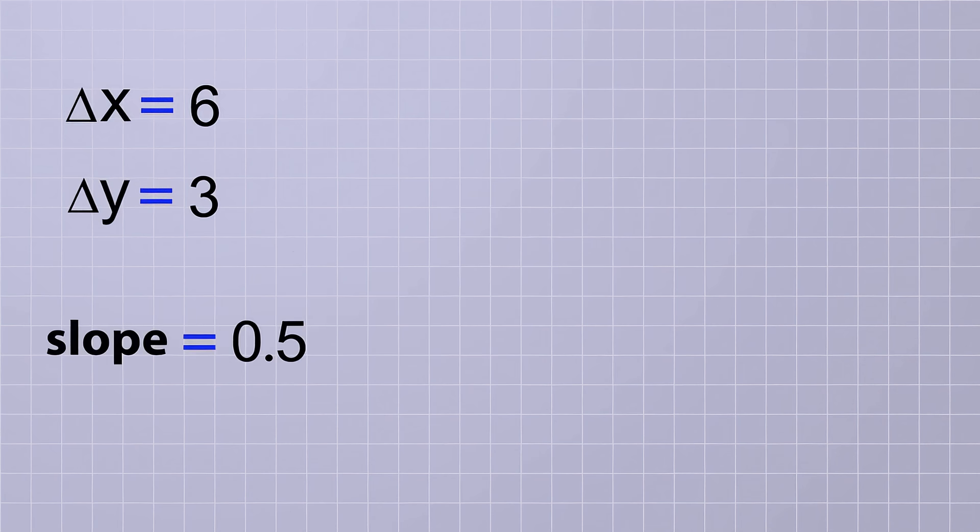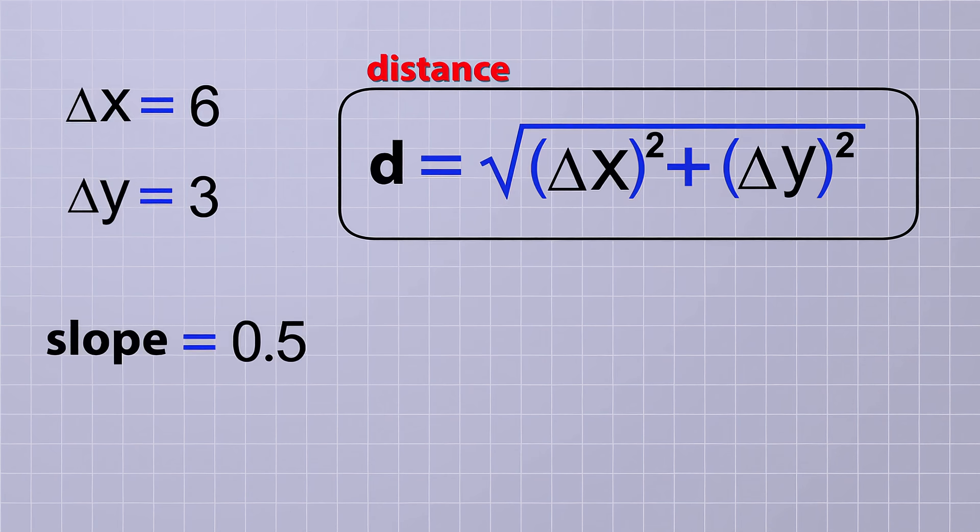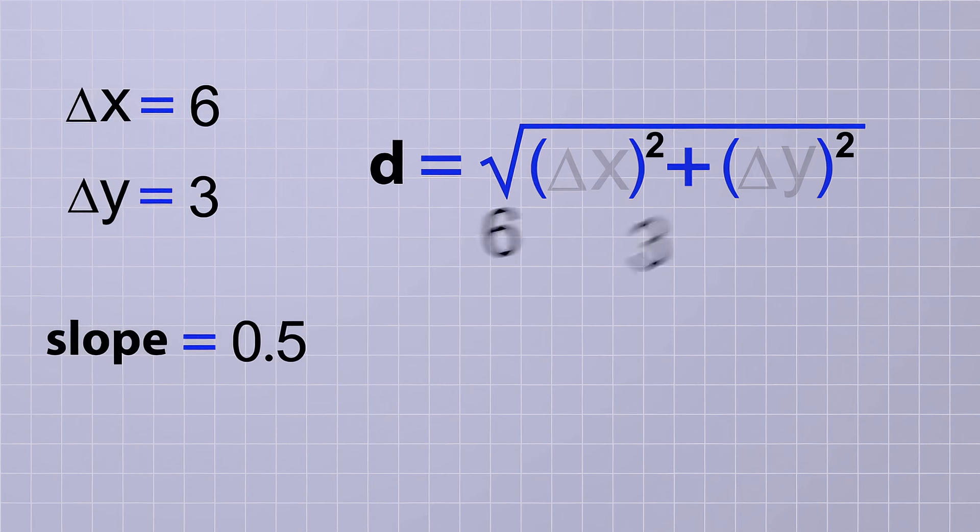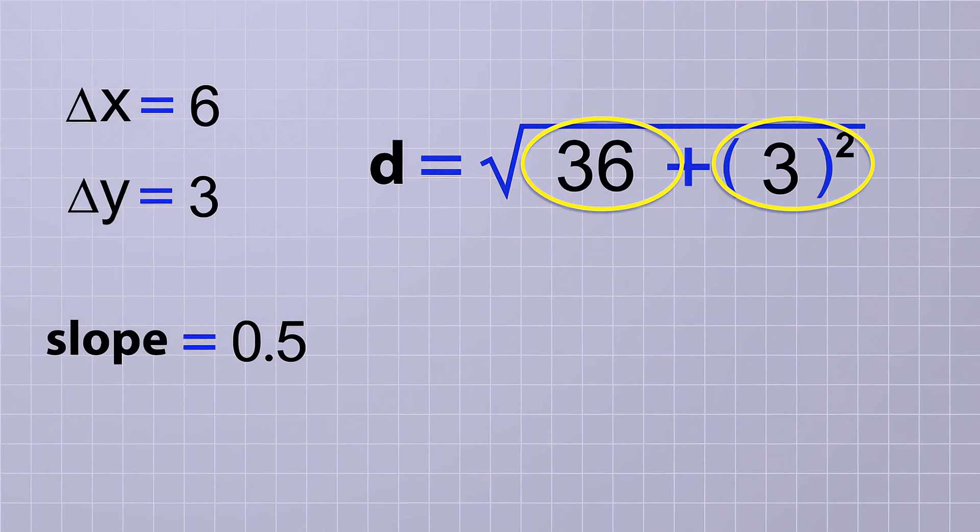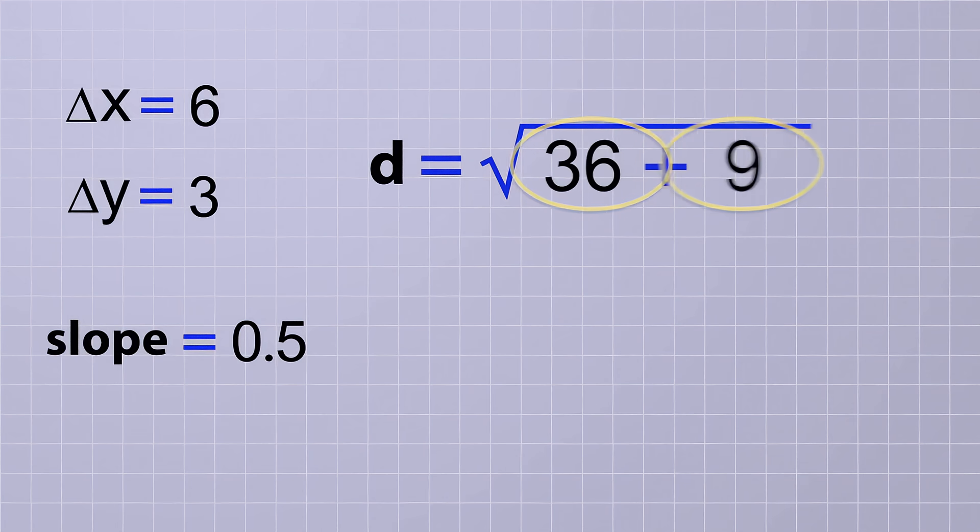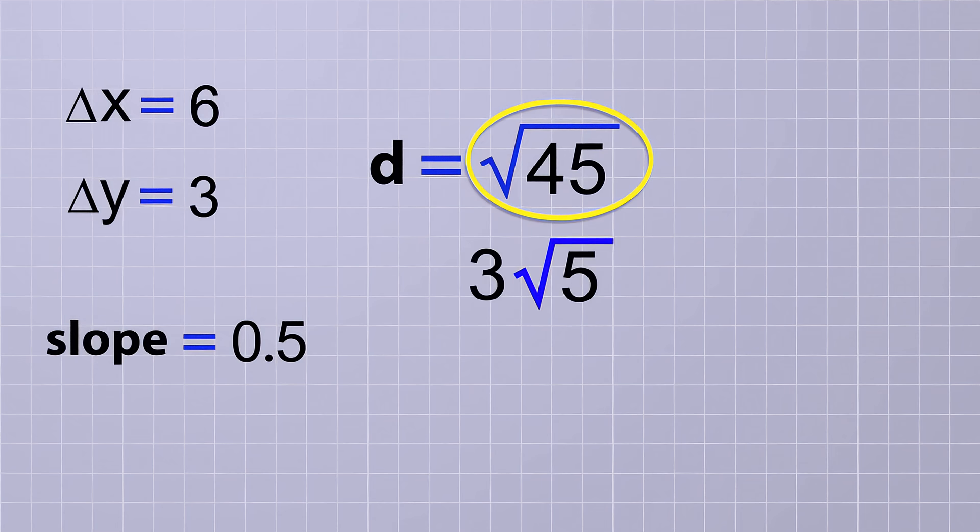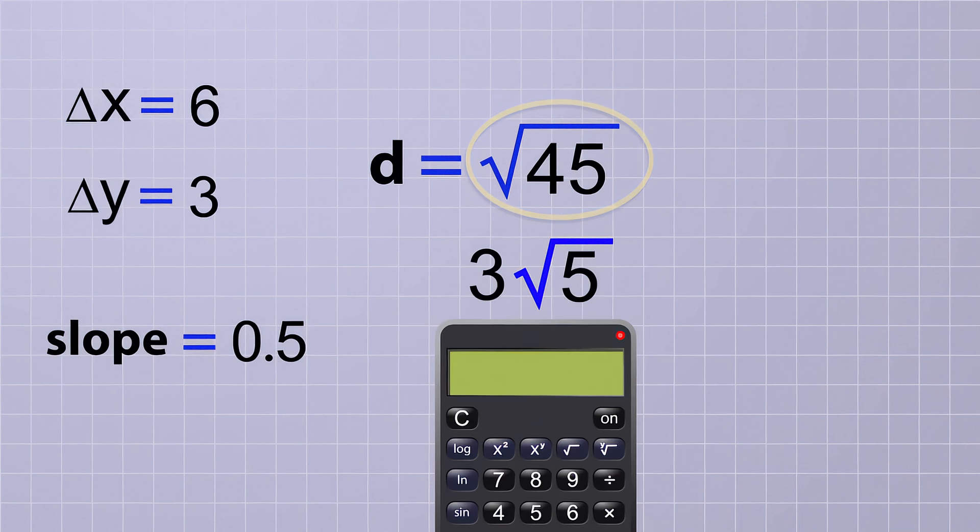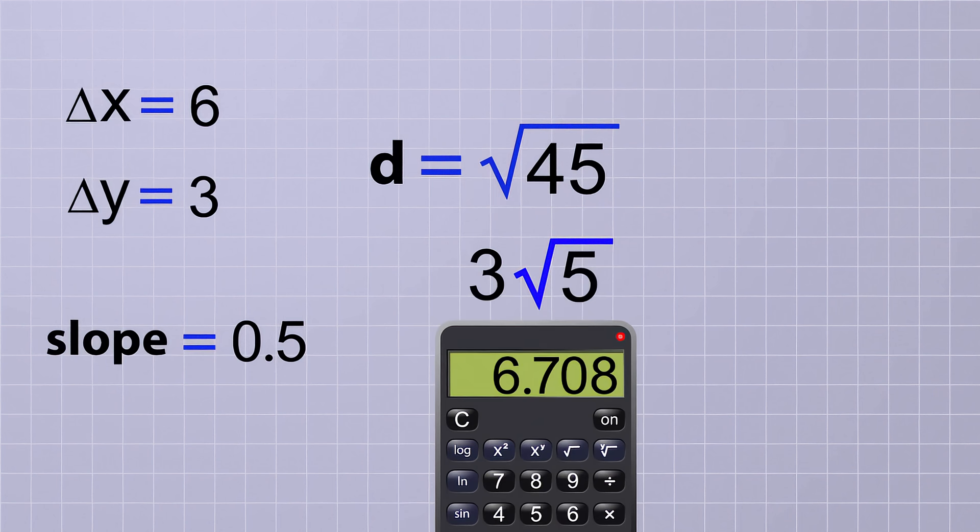Now let's plug those deltas into our distance equation to see how far apart those points are. Doing that tells us that the distance equals the square root of 6 squared plus 3 squared. 6 squared equals 36 and 3 squared equals 9. 36 plus 9 equals 45, so the distance between the points would be the square root of 45. You could also simplify the answer to 3 root 5, or use a calculator to convert it to a decimal, which would be 6.708 rounded to 3 places.